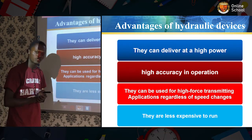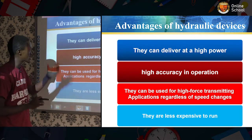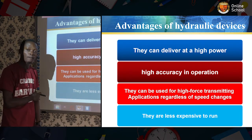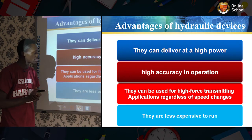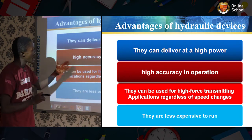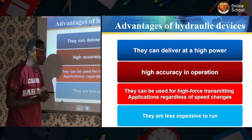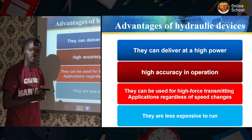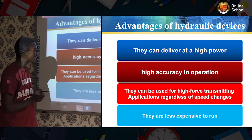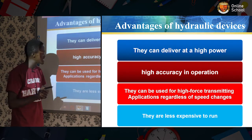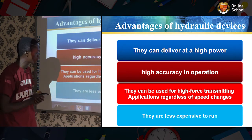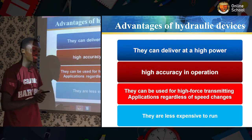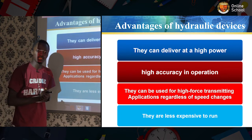Advantages of a hydraulic system: first, they can deliver high power — that is why car jacks are still recommended for hydraulic systems; second, high accuracy in operation, as seen with tractors; third, they can be used for high force transmitting applications regardless of speed changes; and finally, they are less expensive to run.